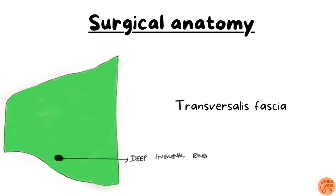After removing the transversus abdominis, we find a fascial layer called the transversalis fascia. There is a small oval defect about 1.25 cm — or half an inch — above the mid-inguinal point, called the deep inguinal ring. The mid-inguinal point is present between the anterior superior iliac spine and the pubic symphysis. The inguinal canal extends from the deep inguinal ring, which is a defect in the transversalis fascia, to the superficial inguinal ring, which is a defect in the external oblique aponeurosis.